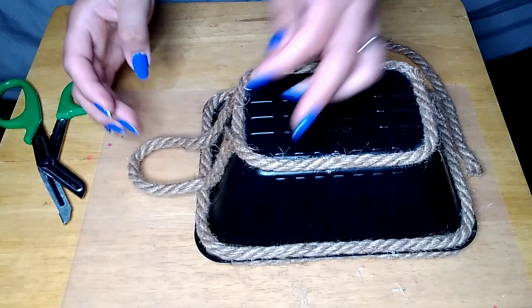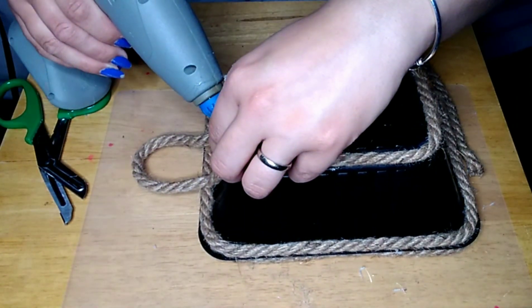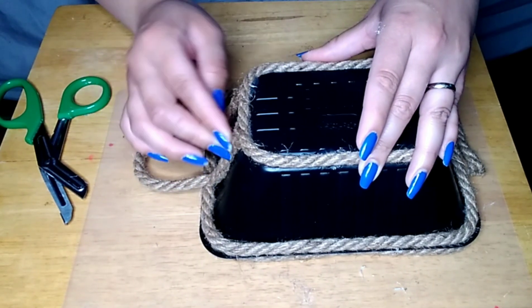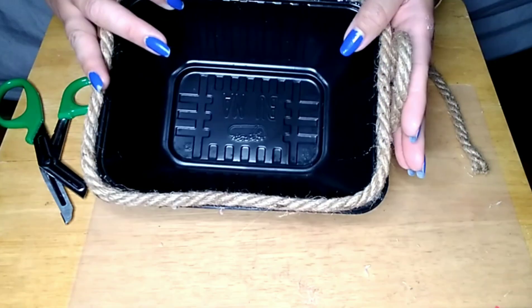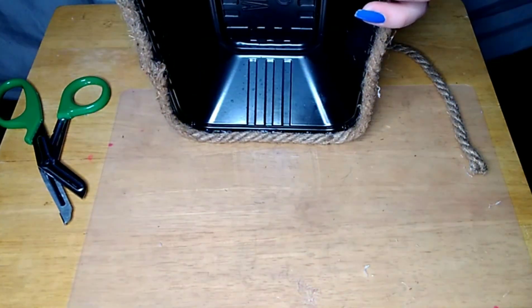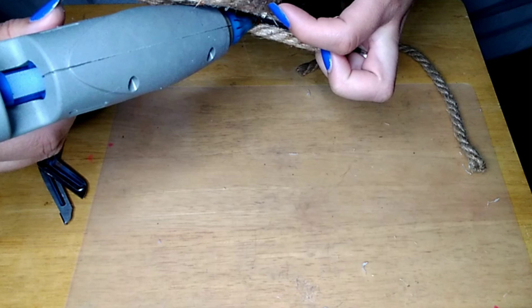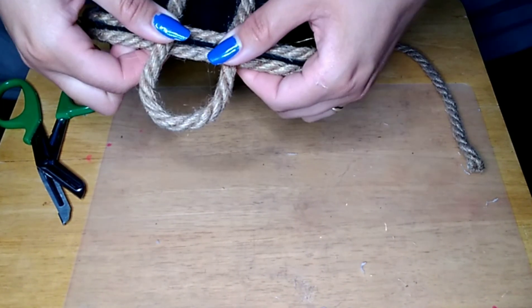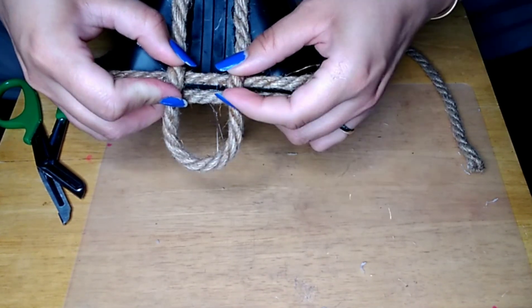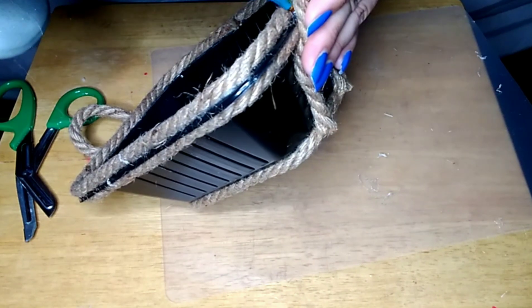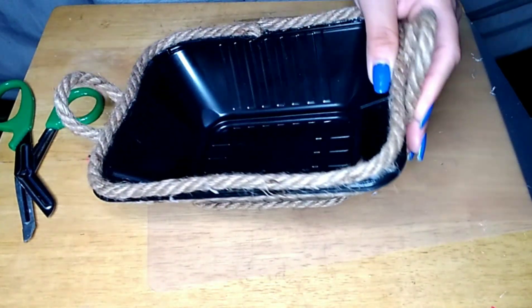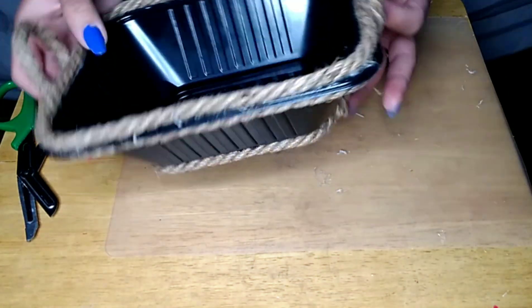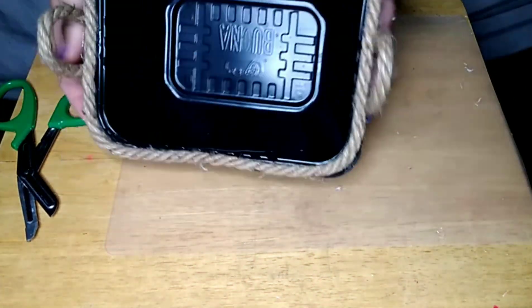And you can even use a ribbon for this. You can use anything, anything you want. But because this is the rope jute twine challenge, I decided to use all twine. So then I'm just going to go ahead and finish it up. I put a little bit of glue along the top lip there so that the little handle stays on there. And then I did that to both sides. And this is how it turned out. And I really, really like it.